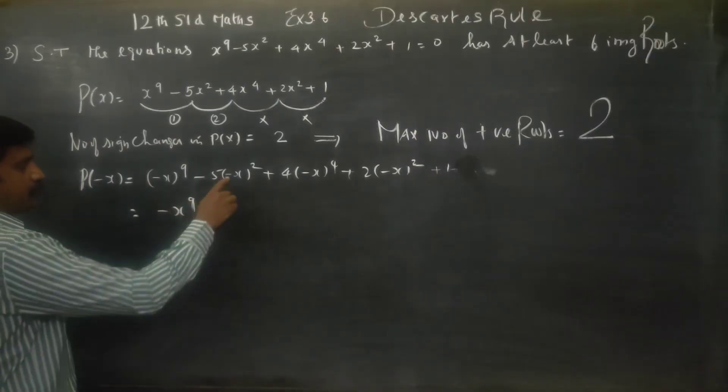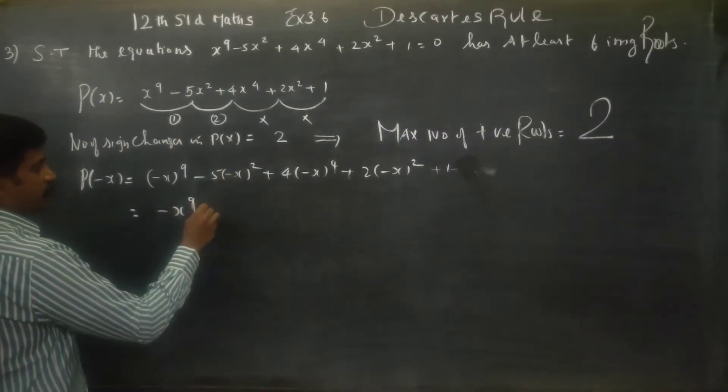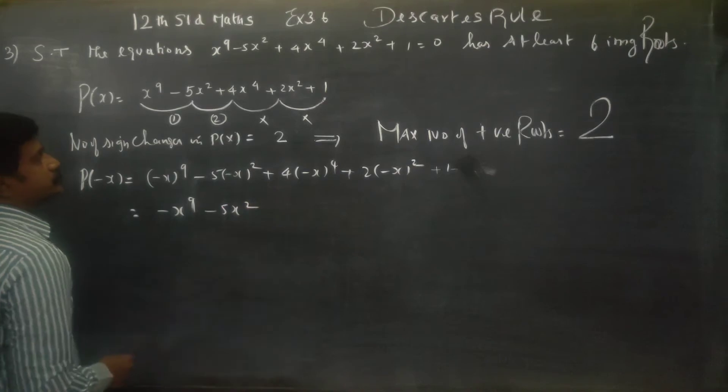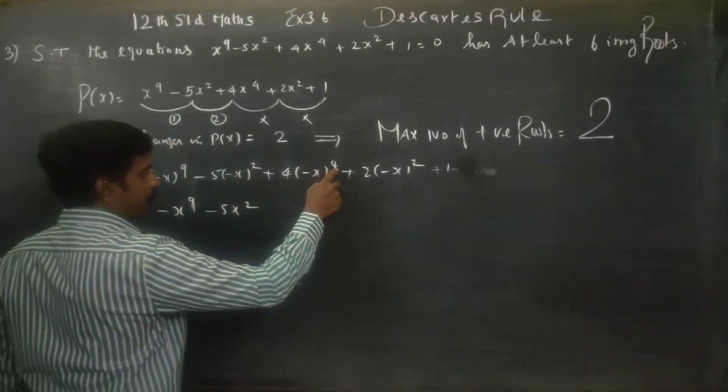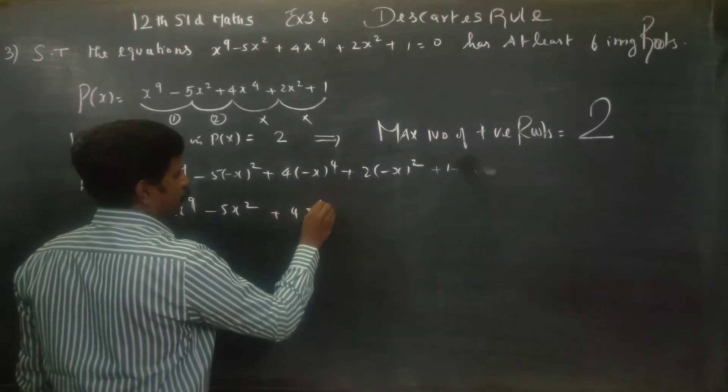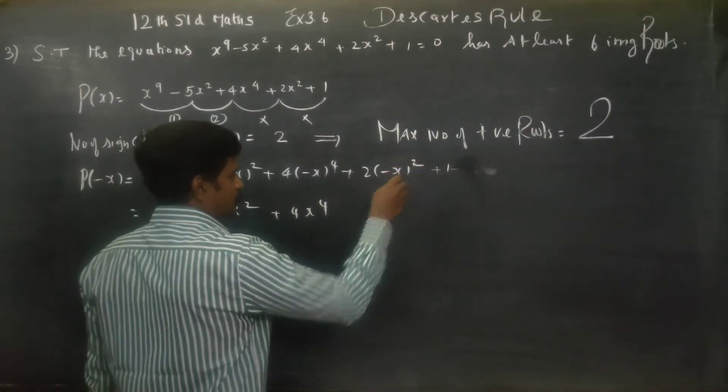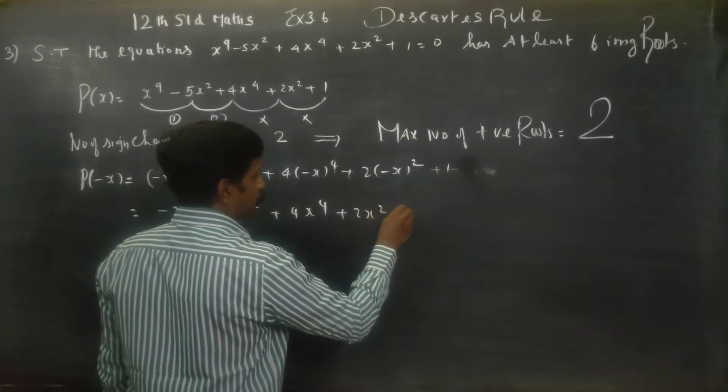Minus x power 9, minus x whole square becomes positive, so minus 5x square. Even power, so positive, plus 4x power 4. Again, positive, plus 2x square plus 1.